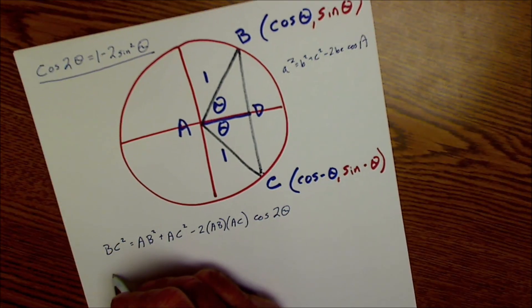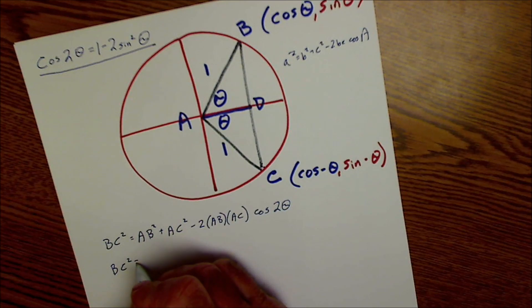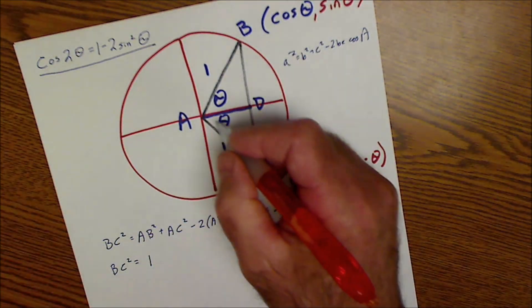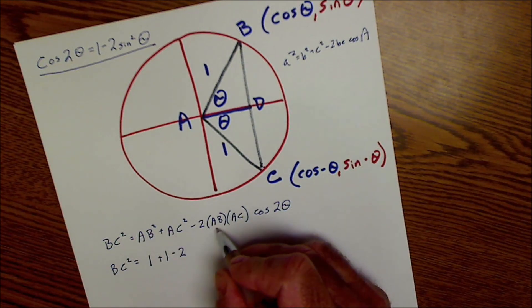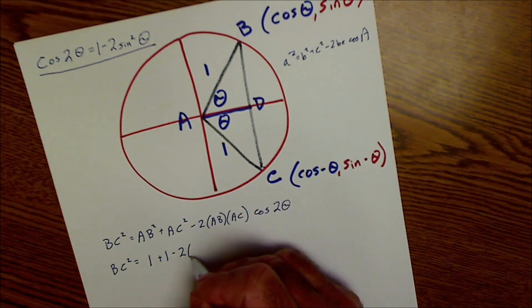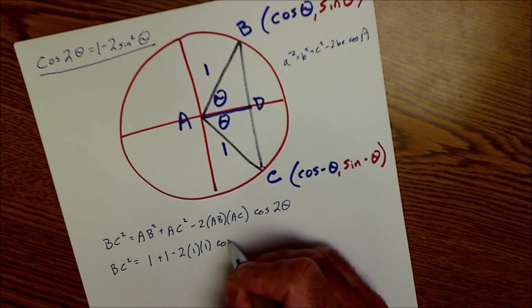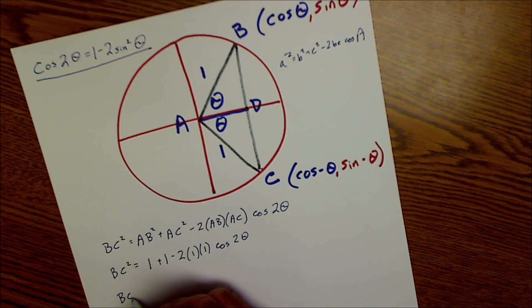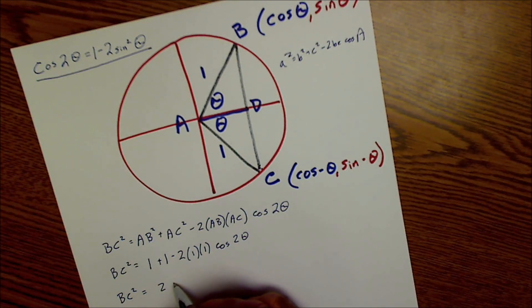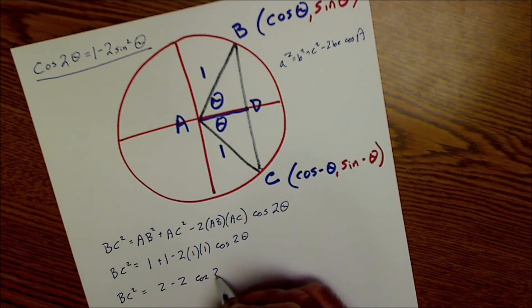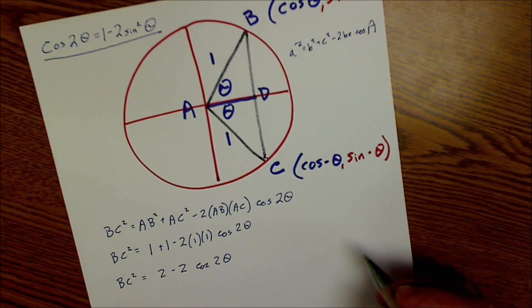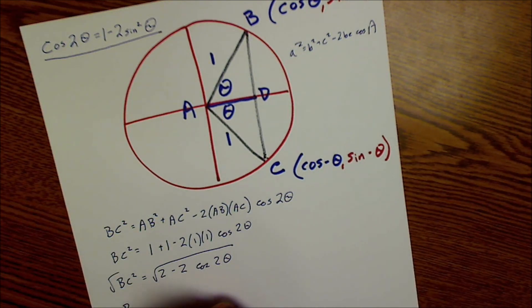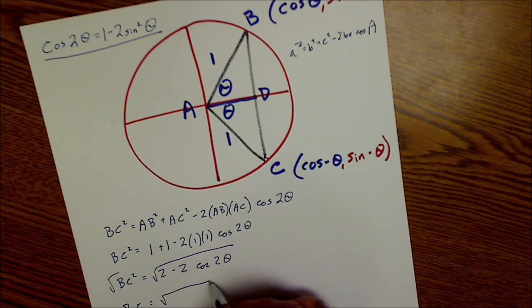Sticking with this, bc² equals ab² which is just 1 plus 1 minus 2 times that leg times that leg times cosine of 2θ. So bc² equals 1 plus 1, which is 2 minus 2·cos(2θ). From there I'm going to take the square root of both sides, giving me bc = √(2 − 2·cos(2θ)).